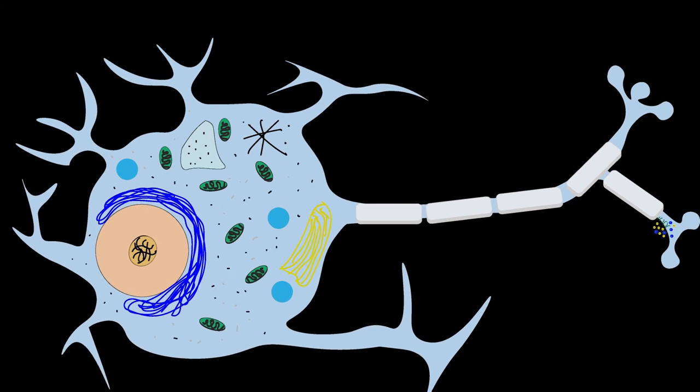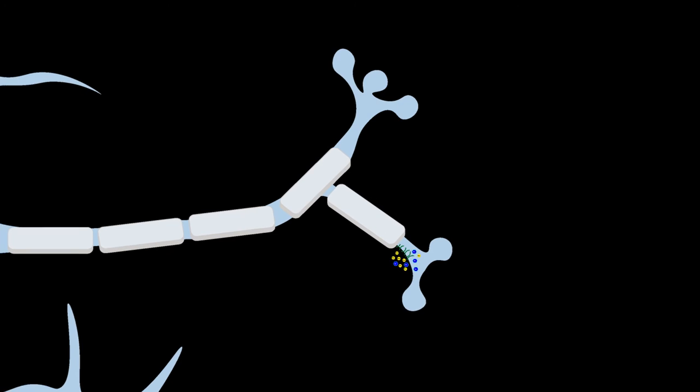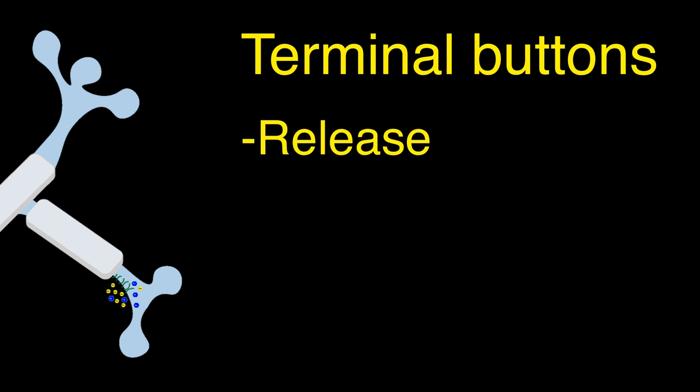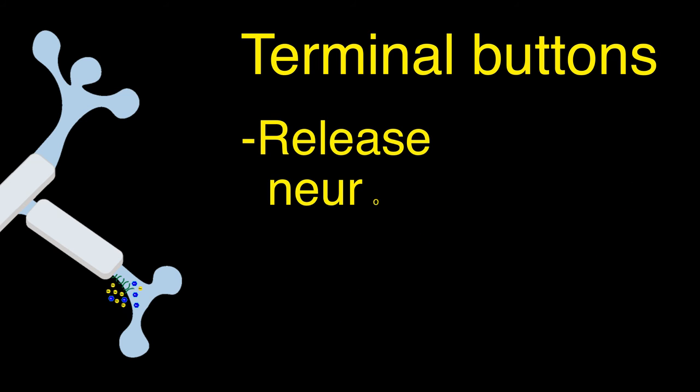Dendrites are responsible for receiving messages, and a part of the neuron called the terminal buttons are responsible for sending messages. When terminal buttons receive a signal, called an action potential, they release special chemicals called neurotransmitters. Neurotransmitters can either excite or inhibit neighboring cells, and are therefore responsible for communication between neurons. We will talk about neurotransmitters in an upcoming video, which will cover signaling between neurons.